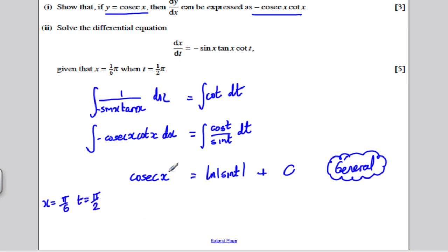So let's substitute that in. On this side, cosec of pi by 6. Well, sine of pi by 6 is a half. So cosec must be 1 over a half, which is 2. And we know that sine of pi by 2 is 1 and ln of 1 is 0. So this tells us straight away our constant of integration is 2.